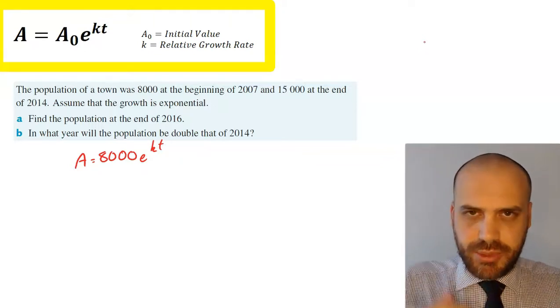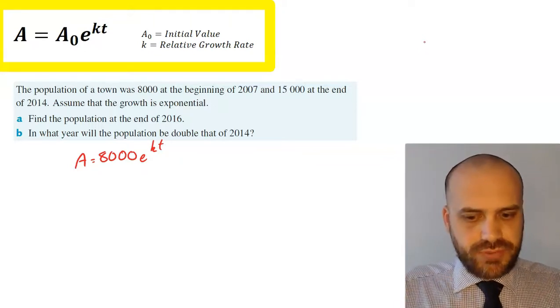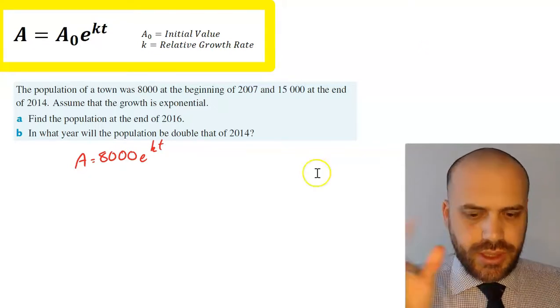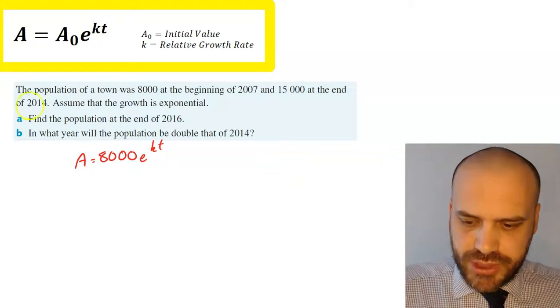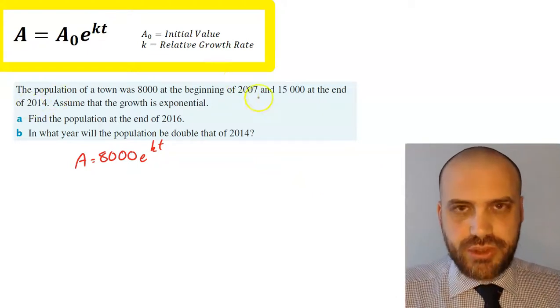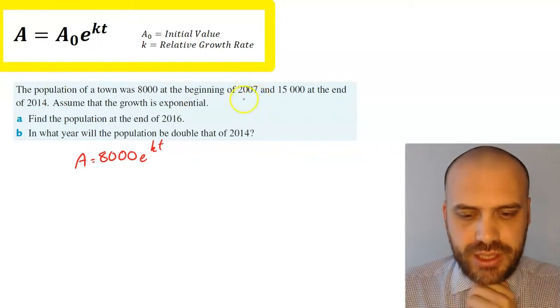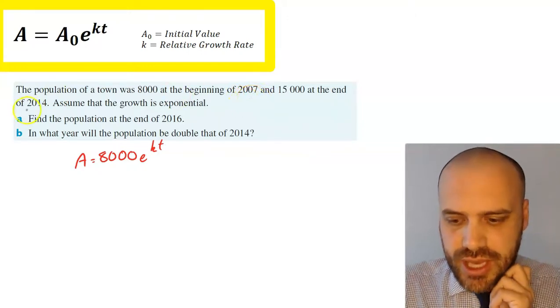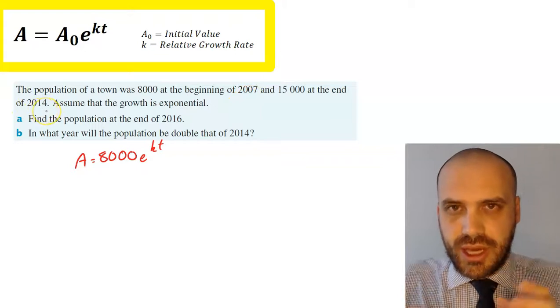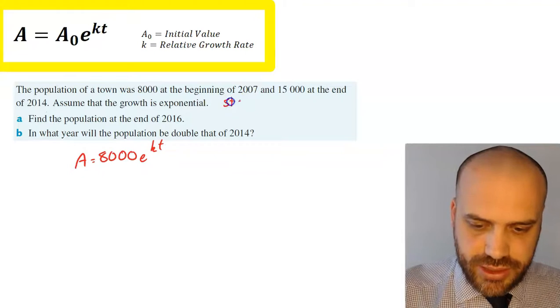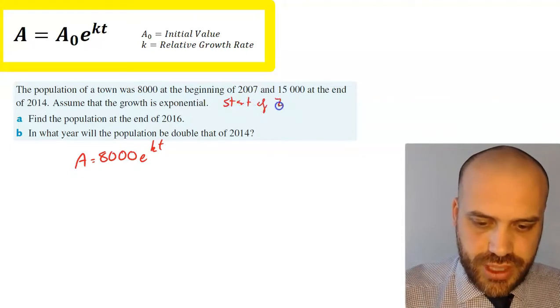So how much time has passed between the beginning of 2007 and the end of 2014? Now a lot of people would want to say 7 years here. Obviously 2014 minus 2007 is 7. But from the beginning of 2007 to the end of 2014, an easier way of writing this question would be to say the start of 2015.